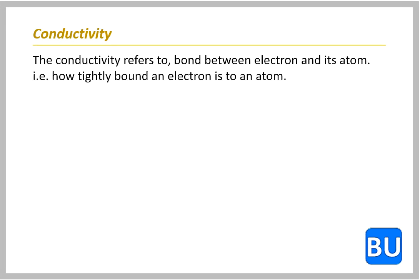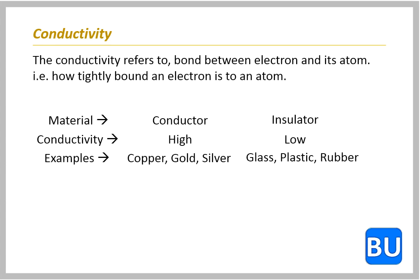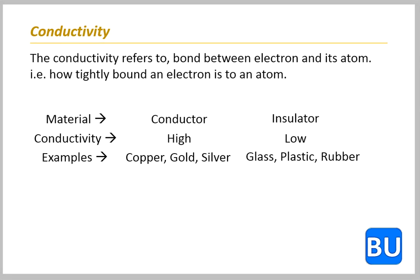The conductivity refers to bond between electron and its atom, that is, how tightly bound an electron is to an atom. Elements with high conductivity which have more free electrons are called conductors. Some good examples are copper, gold and silver. Elements with low conductivity have less free electrons are called insulators. Some good examples are glass, plastic, rubber.